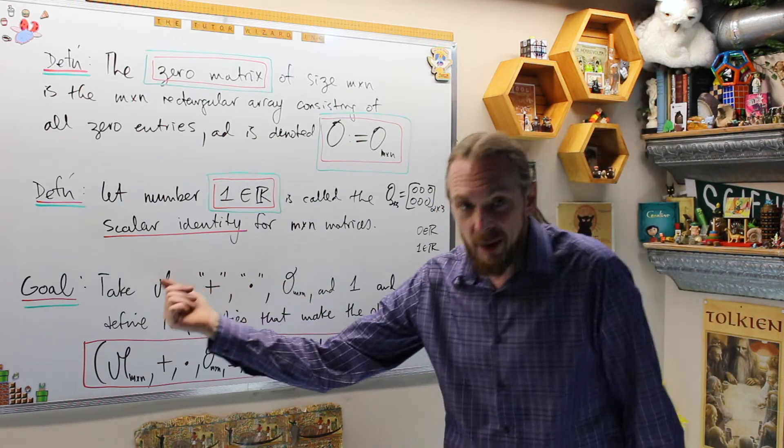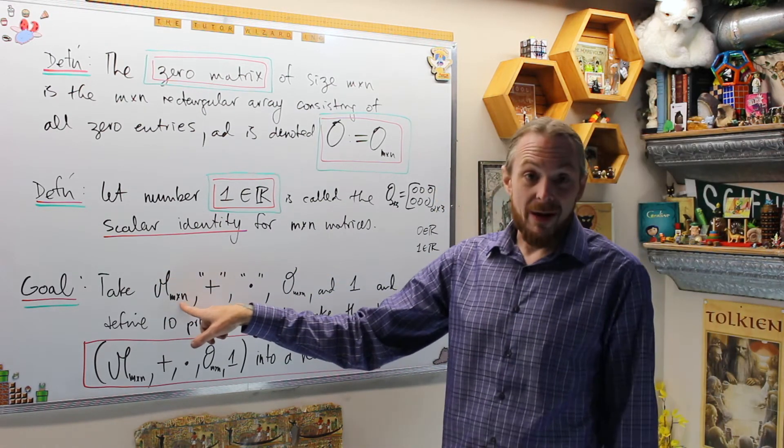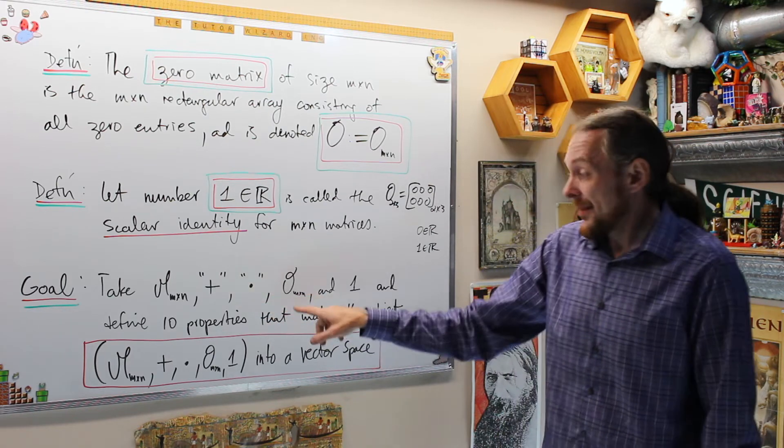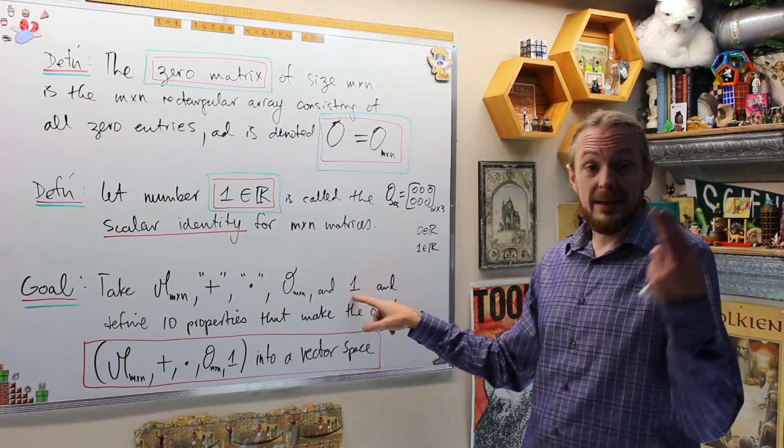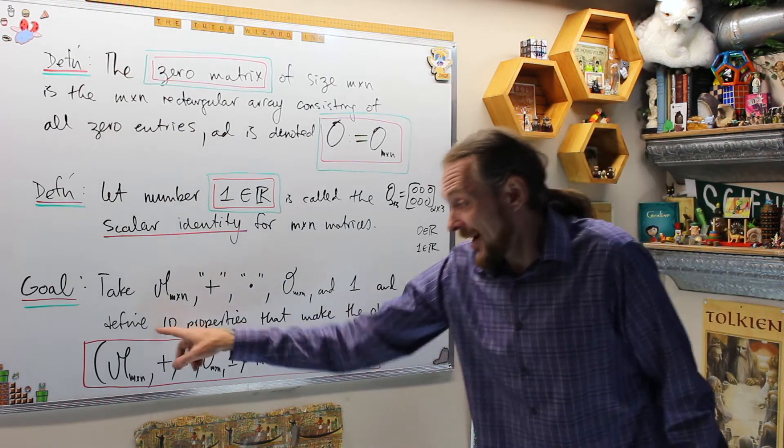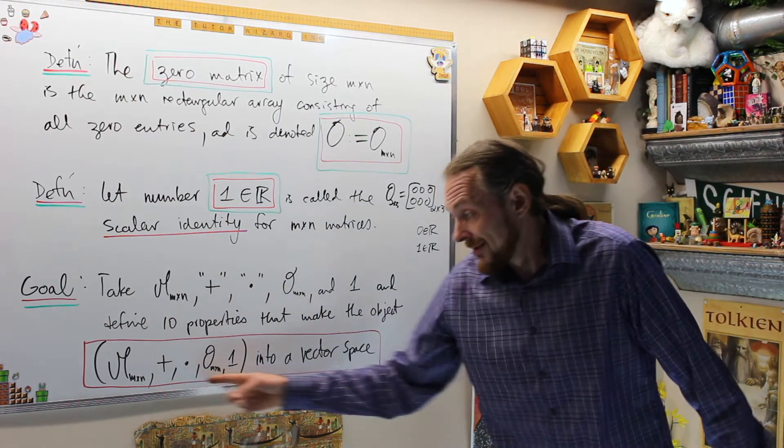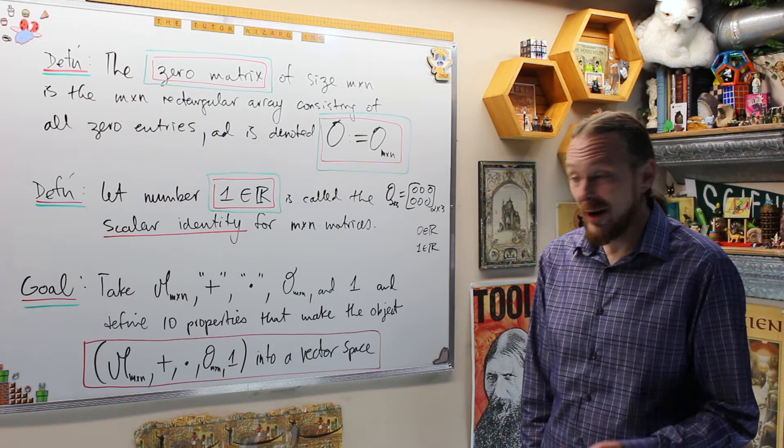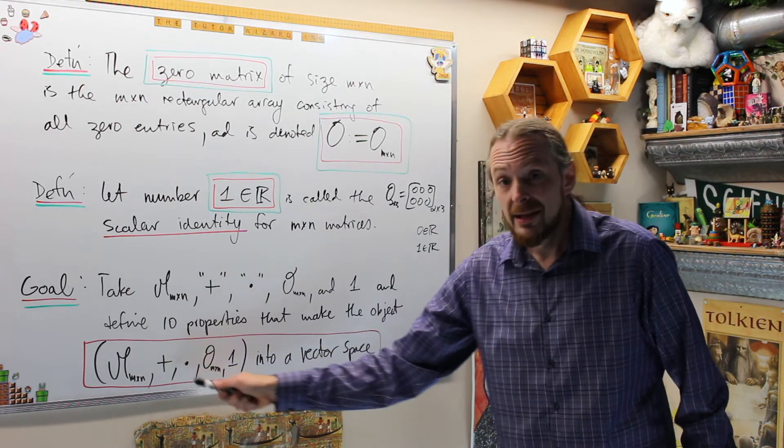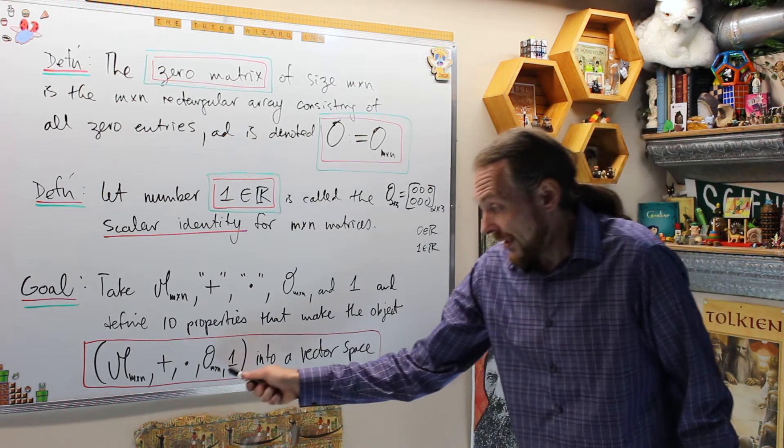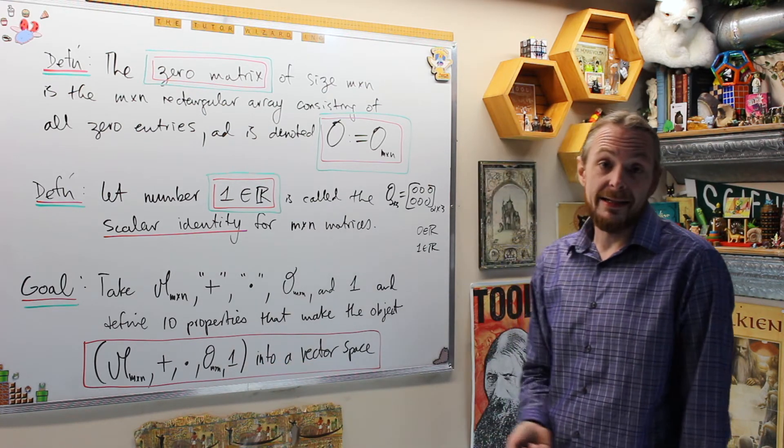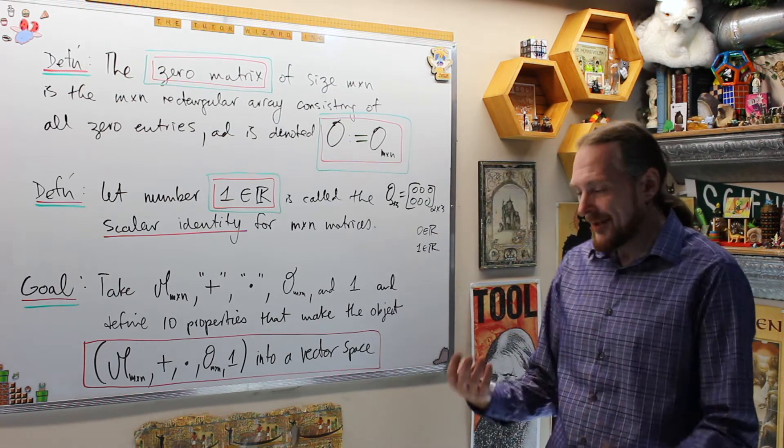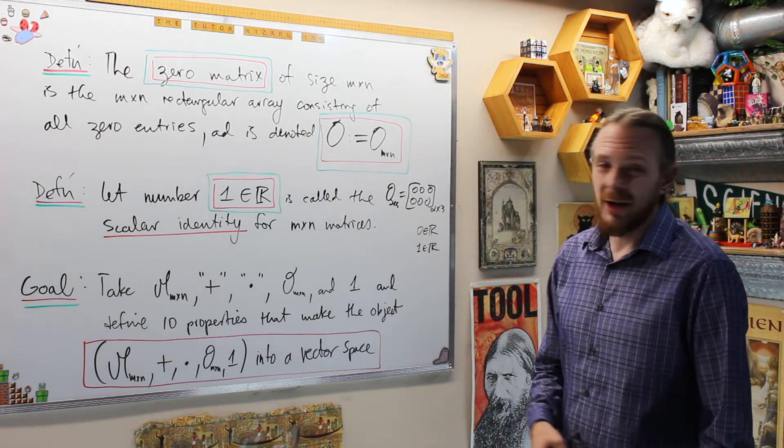The goal now is to take this set of all m by n matrices, matrix addition, scalar multiplication of a matrix times a real number, this object called the zero matrix, and the scalar identity 1, and then we define 10 properties that make this object into what we call a vector space. And that's essentially the definition of a vector space. A vector space is any object, set of objects, with two binary operations called addition and scalar multiplication, which have a zero and a scalar identity, and that will create 10 properties. If you have any kind of object that does that, we call that a vector space.